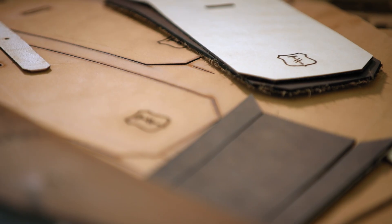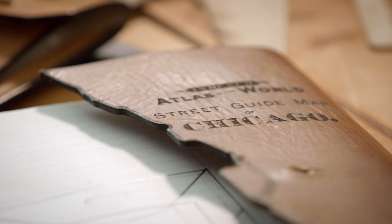We're a handmade leather goods company in Milwaukee, Wisconsin. We make journals, flasks, and all sorts of small leather accessories that we laser etch with antique maps.